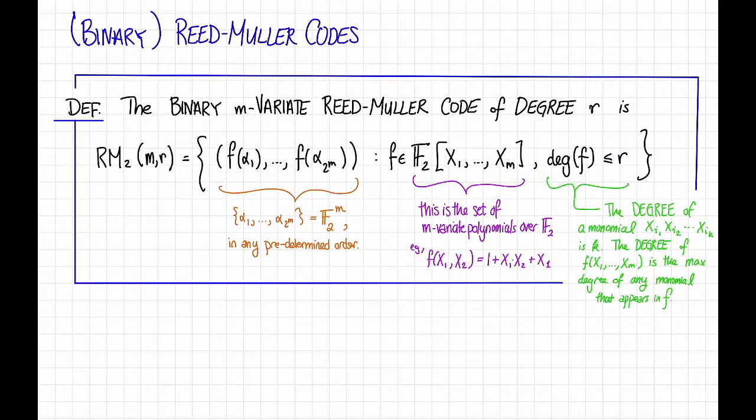So here's the definition of a binary Reed-Muller code. As a historical aside, Reed-Muller codes actually predate Reed-Solomon codes, even though we're going to introduce them the other way around. Reed-Muller codes were invented by Muller and provided with an efficient decoding algorithm by Reed in 1954.